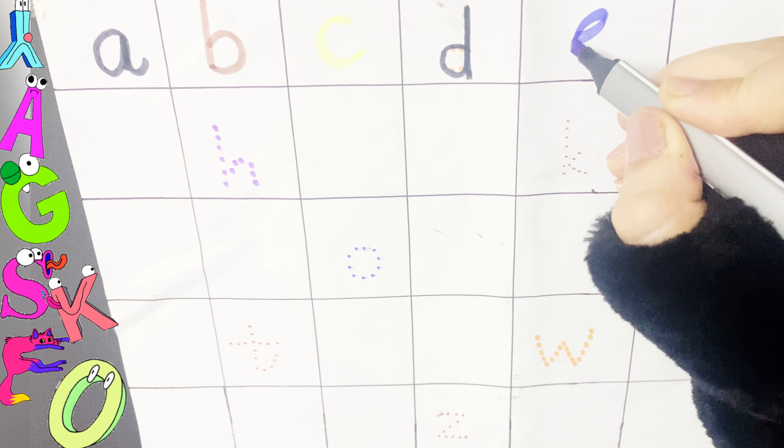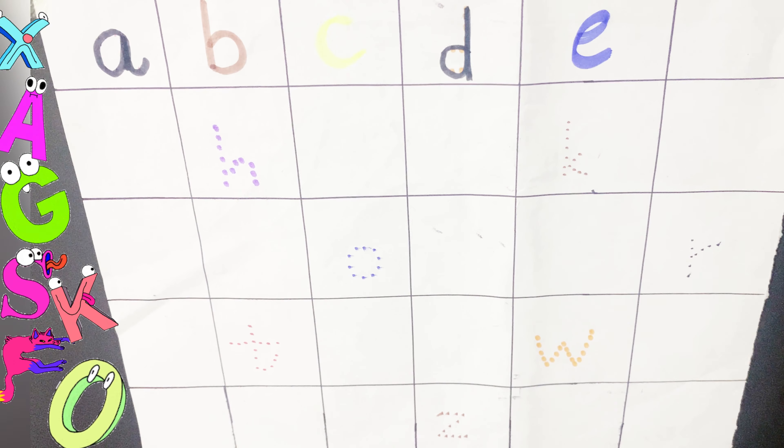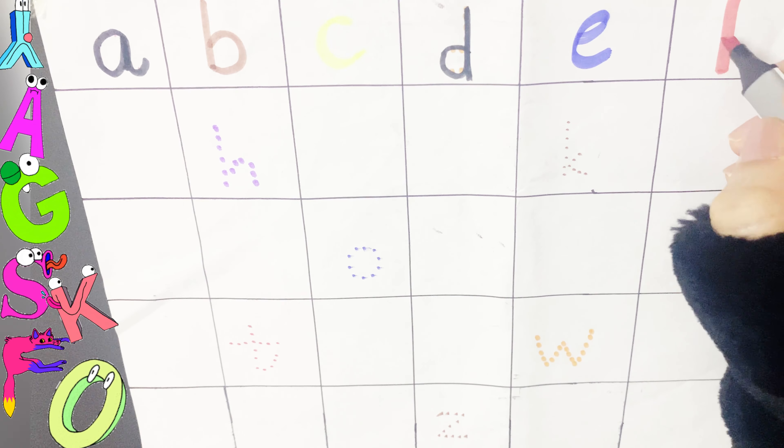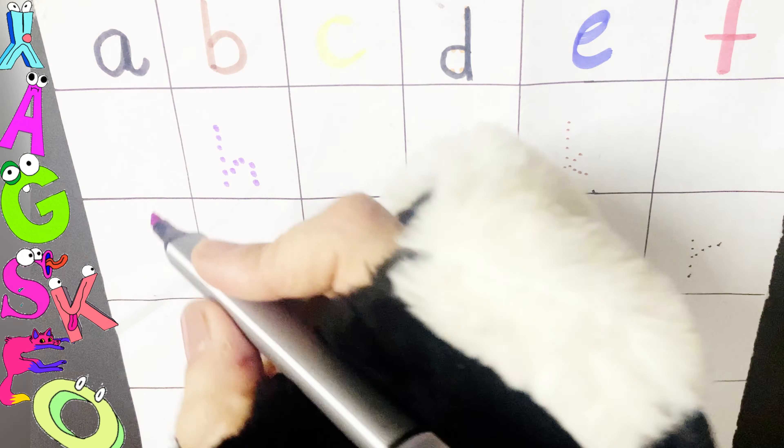E is for Elbow. F is for Frog. What comes after F?